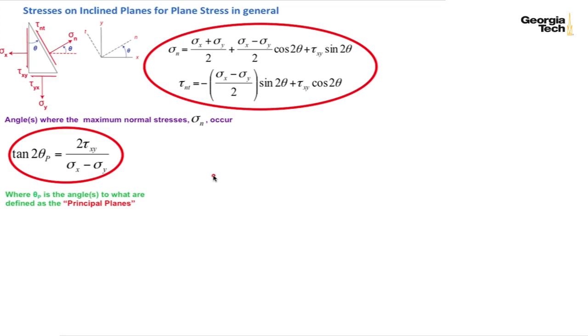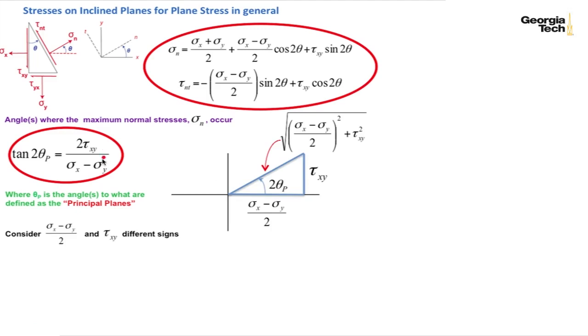Okay, now let's look at the case where these two values, tau xy and sigma sub x minus sigma sub y over 2, end up being a negative sign. You could have a negative tau xy in the numerator and a positive sigma sub x minus sigma sub y over 2 value in the denominator, or you could have a positive tau sub xy value in the numerator and a negative sigma sub x minus sigma sub y over 2 value in the denominator.